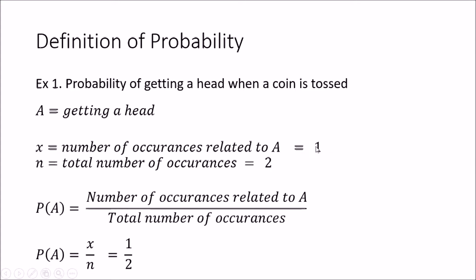The total number of occurrences when I toss a coin is 2, because you can get either a head or a tail. By definition, the probability of A is the number of occurrences related to it — that is 1 — divided by the total number of occurrences — that is 2. Therefore P(A) = 1 over 2.